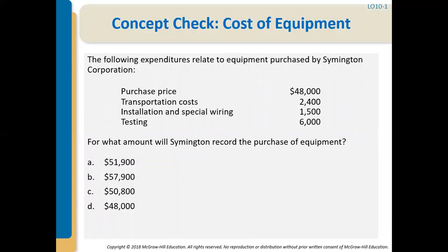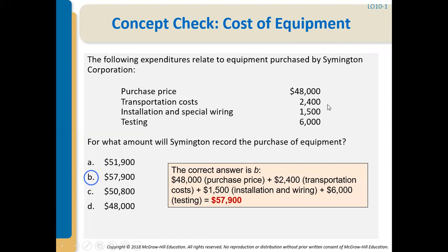Concept check: Symington Corporation purchased equipment with a purchase price of $48,000, transportation costs of $2,400, installation and special wiring of $1,500, and testing of $6,000. All of these amounts can be capitalized and put on the balance sheet. Adding them together gives a total recorded cost of $57,900.